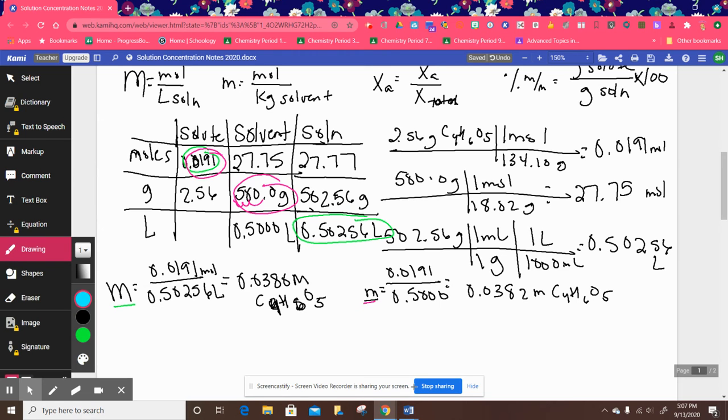Okay, now if we want to do mole fraction, I need moles of the solute per moles of solution, the total. So X of C4H6O5 is equal to moles of the solute, 0.0191 per moles of the solution, 27.77. And this is going to end up unitless. And so when we divide that, we get 6.88 times 10 to the negative 4 as the mole fraction of C4H6O5 of malic acid. So I circled what I needed in blue for that one.